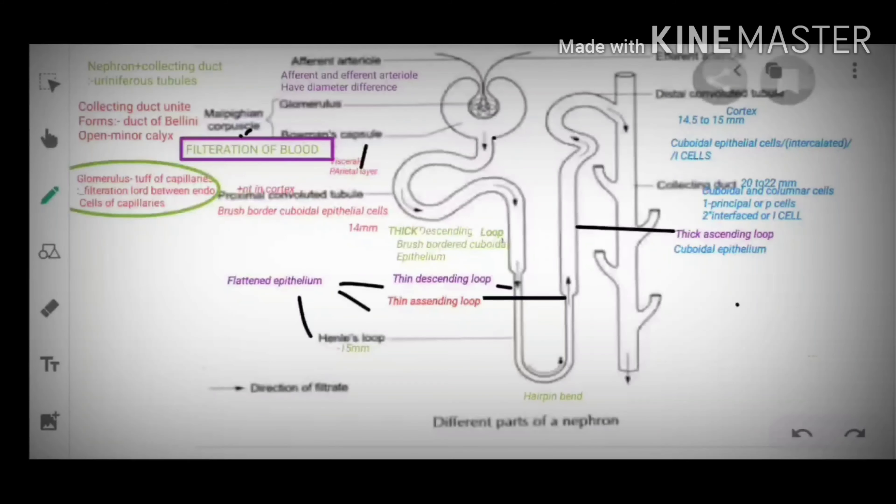Now we are going to study nephron which is the structural and functional unit of kidney. Each kidney contains 1 to 1.3 million nephrons. Nephron contains two parts.